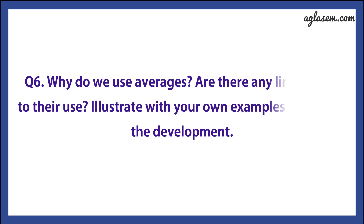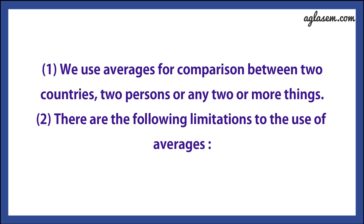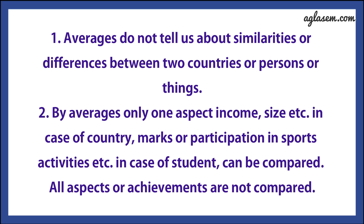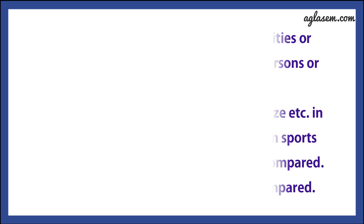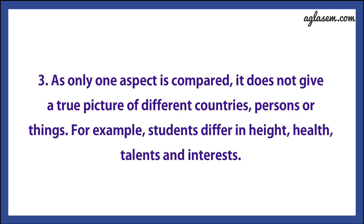Question number 6 says: why do we use averages? Are there any limitations to their use? Elucidate with your own example related to development. Answer: we use averages for comparison between two countries, two persons, or any two or more things. The limitations are: first, averages do not tell us about similarities or differences between two countries, persons, or things. Second, by average, only one aspect — such as size in the case of a country, or marks or participation in sports activities in the case of students — can be compared; all aspects or achievements are not compared. Third, as only one aspect is compared, it does not give a true picture of different countries, persons, or things. For example, students differ in height, health, talents, and interests.